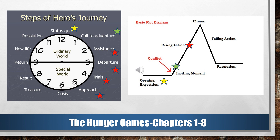Before we talk about the Hunger Games and the hero's journey, let's use this 12-point clock to compare the steps of the hero's journey to a basic plot diagram like we talked about yesterday. The status quo in our hero's journey can be directly compared to the opening or exposition of the plot diagram, where we first meet the characters and learn their backstory. The call to adventure can be compared to the inciting moment or the main conflict in the plot diagram, where our hero is called out of their normal world.